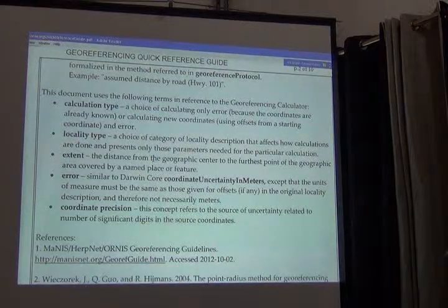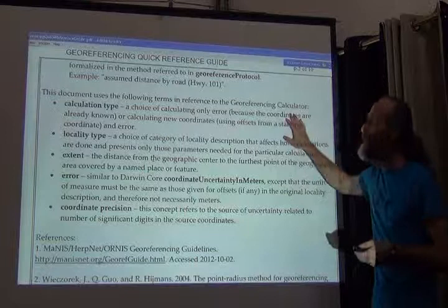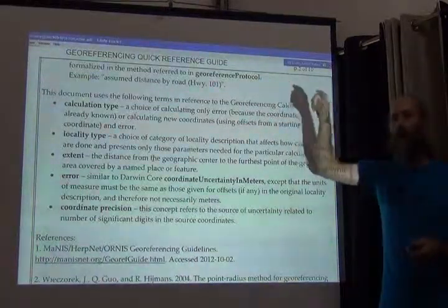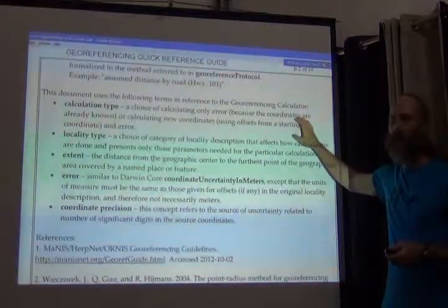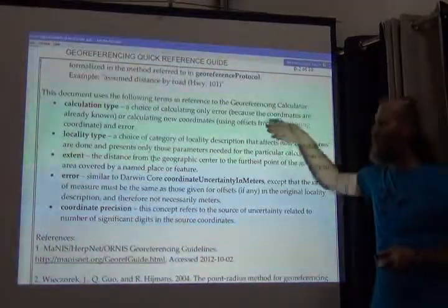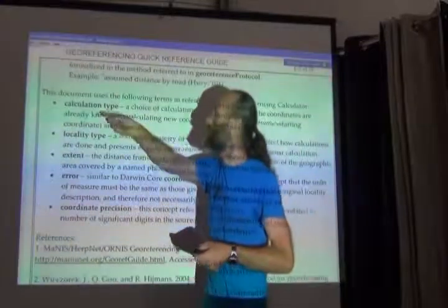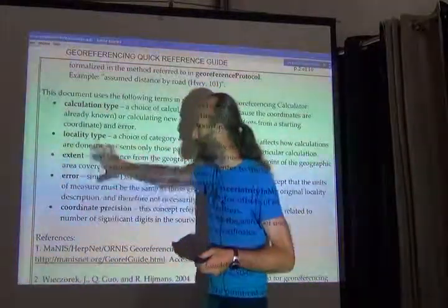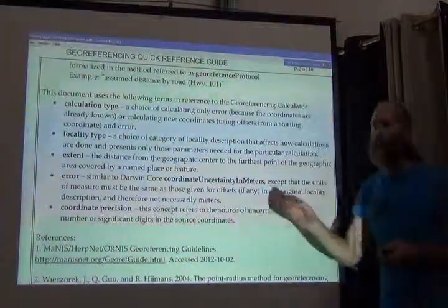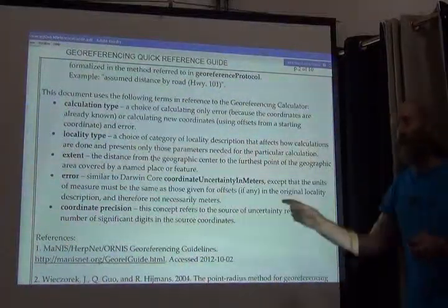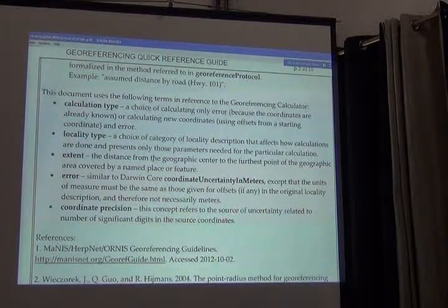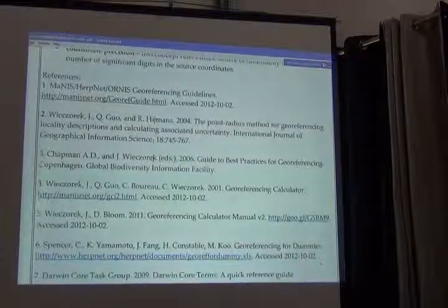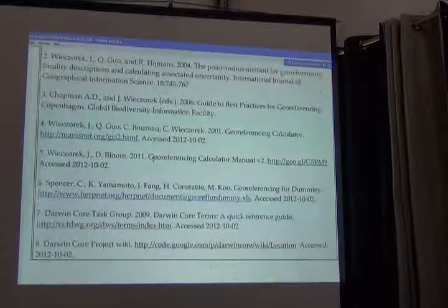The second section of the document describes how to use the geo-referencing calculator in combination with this quick reference guide. It explains how on the calculator you make calculation types and locality types — describing the parts of the calculator and how to use them in relation to this document.